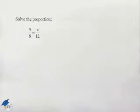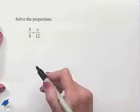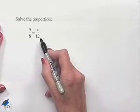In the next problem, we're going to solve a proportion. Solve the proportion given by 5 over 8 equals x over 12. It's a proportion because we have a fraction equals a fraction.